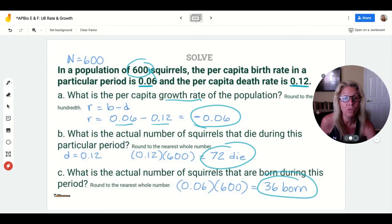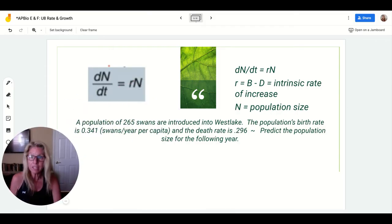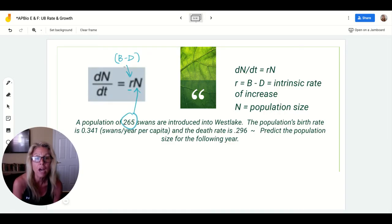Let's level up a little bit more. You're looking at the change in population over time. That equals r - remember what r equals: the birth rate minus the death rate - times the size of the population. It says a population of 265 swans, so you should know that 265 equals N, that's your population size, are introduced into Westlake. The population's birth rate is 0.341 and the death rate is 0.296. Predict the population size of the following year. Pause me just for a minute and try to work it out on a piece of paper, and then you can check to make sure you have it right.